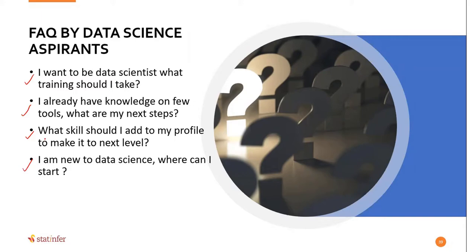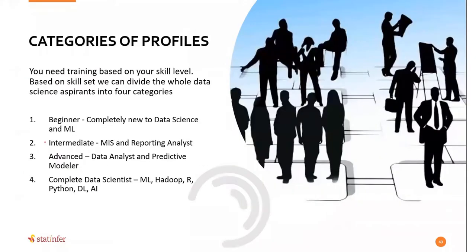Obviously, there are different types of profiles in data science. It's not just one profile. You have beginner level, intermediate, advanced level, and even complete data scientist. We are talking about beginner, intermediate, or advanced levels. Some of you are eligible for intermediate level even though you don't know anything about data science yet. After learning, you should apply directly for intermediate level.